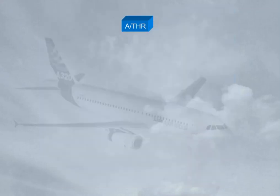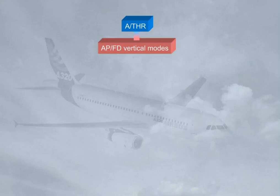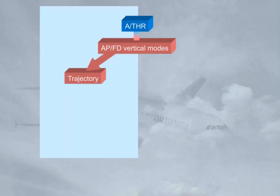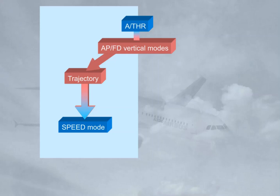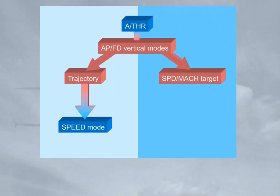The autothrust modes are automatically linked to autopilot flight director vertical modes. When the autopilot flight director vertical mode controls a trajectory, e.g. altitude hold, vertical speed, or glide slope, the autothrust is in speed mode. When the autopilot flight director vertical mode adjusts the aircraft pitch in order to keep a target speed or Mach, e.g. climb or descent, the autothrust is in thrust mode.